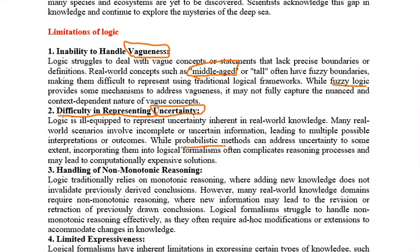To handle uncertainty, we use the probabilistic method. Just as fuzzy logic is used for vagueness, the probabilistic method addresses uncertainty. We take whichever probability is higher as the result. For example, in a survey if seven people said yes and three said no, the probability favors yes because most people accepted that statement. So from multiple outcomes, the probabilistic method helps choose the most likely correct output.